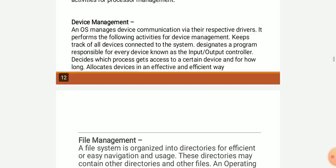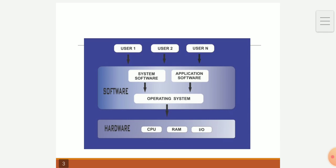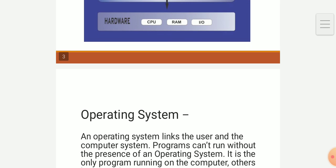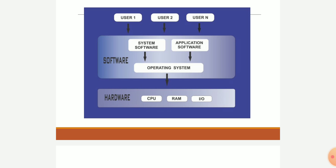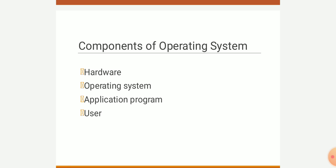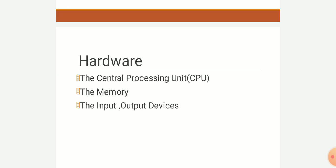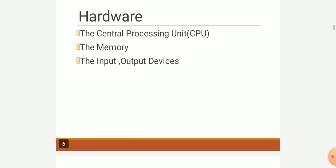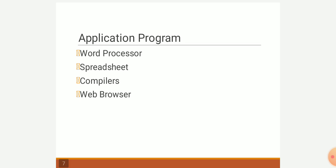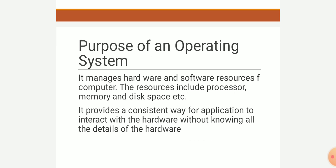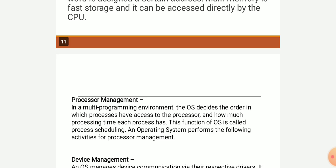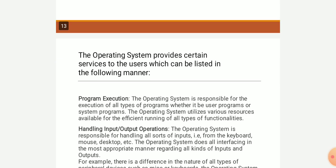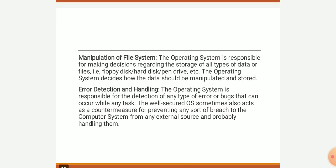In summary, this presentation discussed the introduction to operating systems: the types of OS, the definition using a diagram showing OS as an interface, the components of OS (hardware — CPU, memory, I/O devices), application programs, the purpose and objective of OS, and the functions and services of OS. Basically, the operating system provides coordination and management between all things working on a system. Thank you.